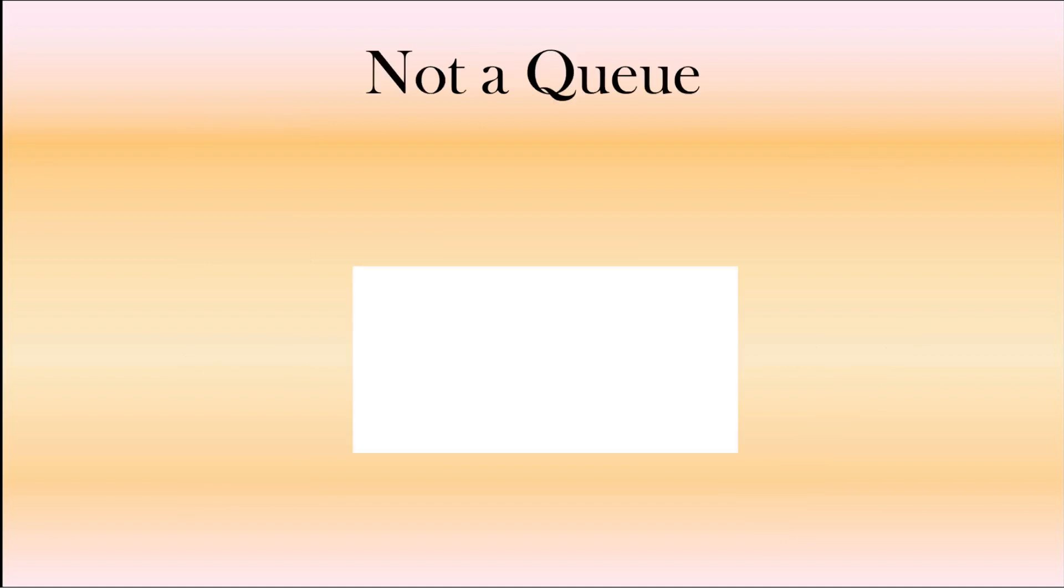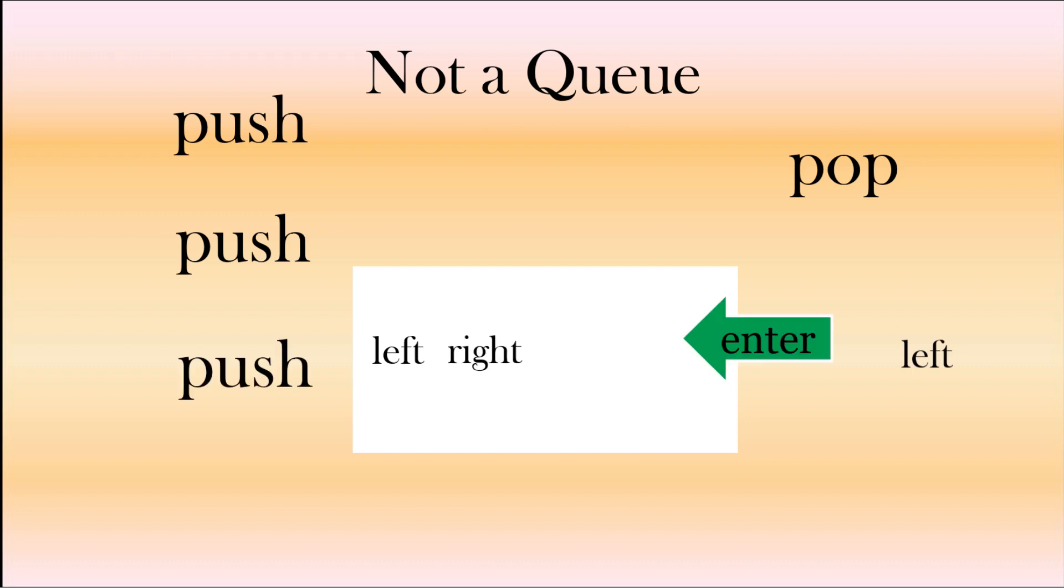What about our queue? So here we've got a queue going from left to right, so the left is at the front of the queue, right is the back of the queue. So we're going to push in our left, then we're going to push in another left, we're going to pop that out, it goes out the back, then we're going to push in a right, and then we're going to push in a left. So that gives us our left, right, left.